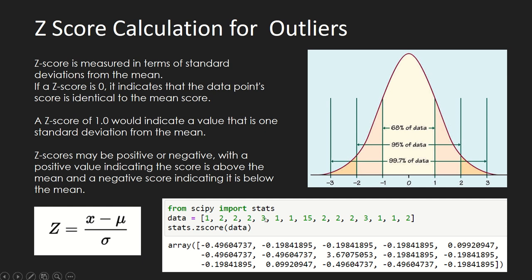We can calculate z-score using the stats package from scipy. It is said that if the z-score of a data point is greater than or equal to 3, that point can be treated as an outlier. In this dataset, the value 15 has a z-score of 3.67, making it an outlier. However, there is no hard rule — based on your business requirement you can set the threshold at 2, 1.5, or 3.